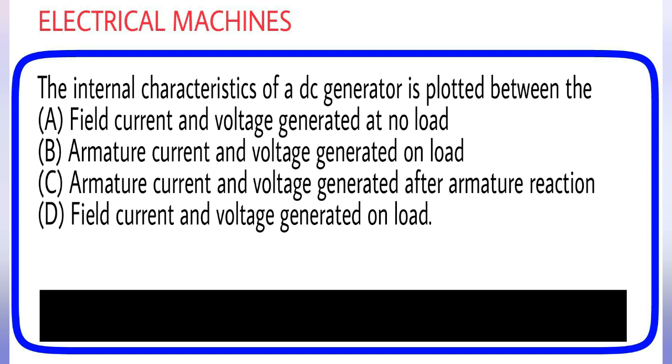The internal characteristics of a DC generator is plotted between: (A) Field current and voltage generated at no load, (B) Armature current and voltage generated on load, (C) Armature current and voltage generated after armature reaction, (D) Field current and voltage generated on load. Answer is option B.